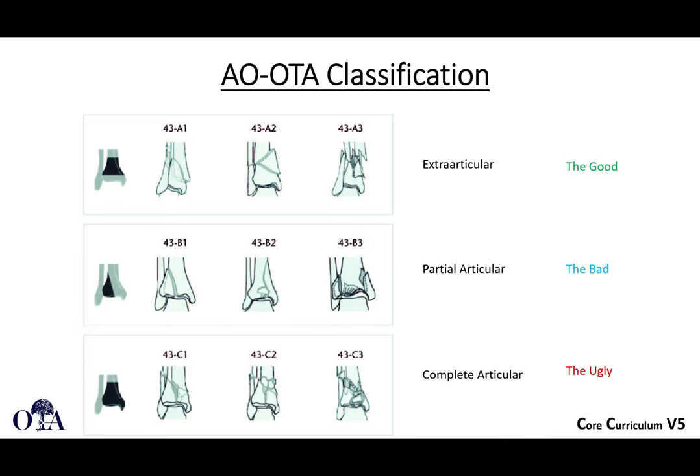The AO classification is helpful. These are 43 fractures—tibia is 4, distal is 3. As with any periarticular fracture, A-type fractures are extraarticular, ranging from simple to more comminuted A3 patterns. B-type fractures are partial articular—there is articular injury but it's not dissociated from the shaft. C-type fractures are when all articular segments are dissociated from the shaft.